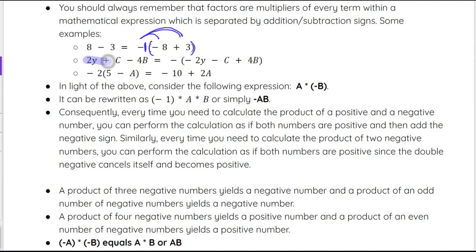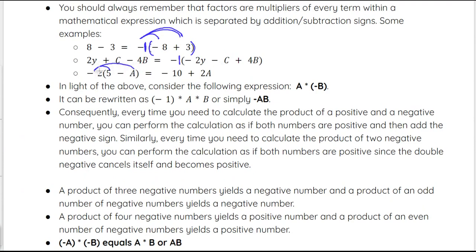For 2y plus c minus 4b: if we pull out a negative 1, each term changes sign, giving us negative (negative 2y minus c plus 4b) — all three terms are opposite signs. Then for negative 2 times (5 minus a), we distribute: negative 2 times 5 is negative 10, and negative 2 times negative a is positive 2a, because a negative times a negative is positive. So the result is negative 10 plus 2a.